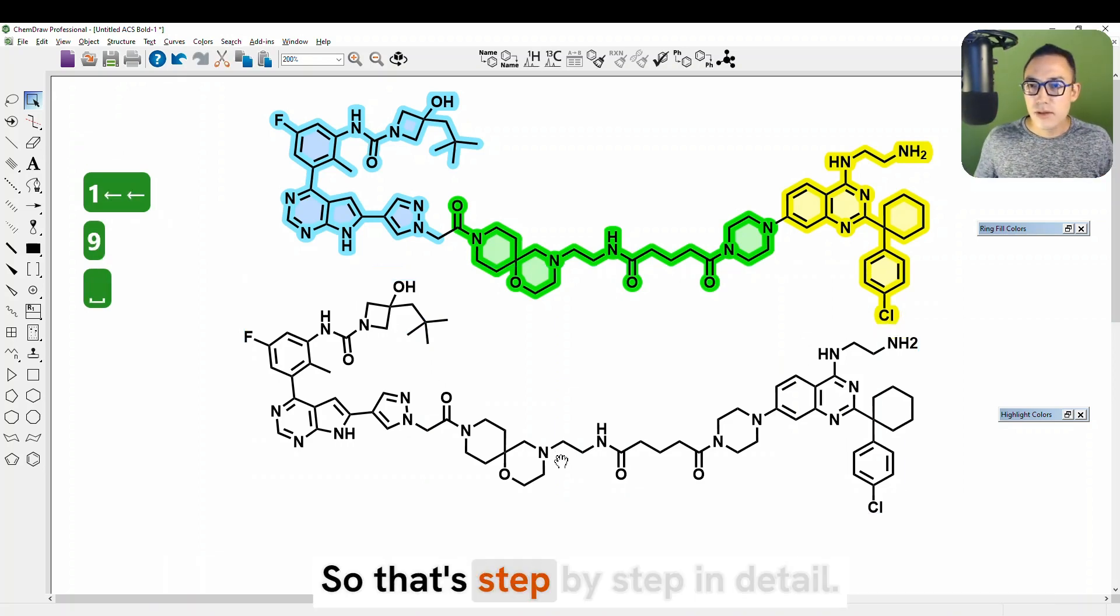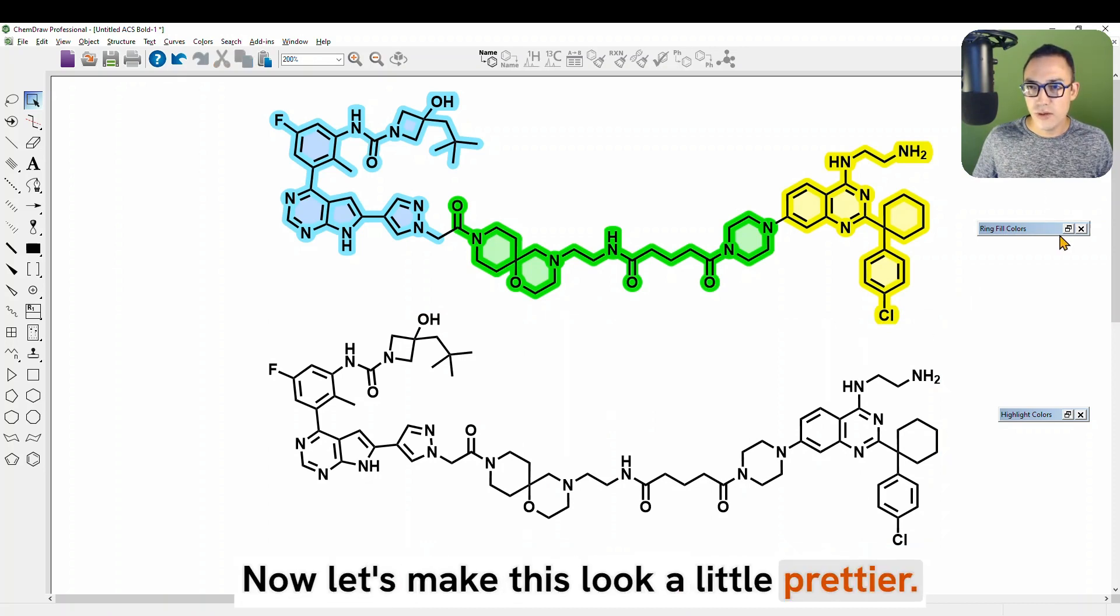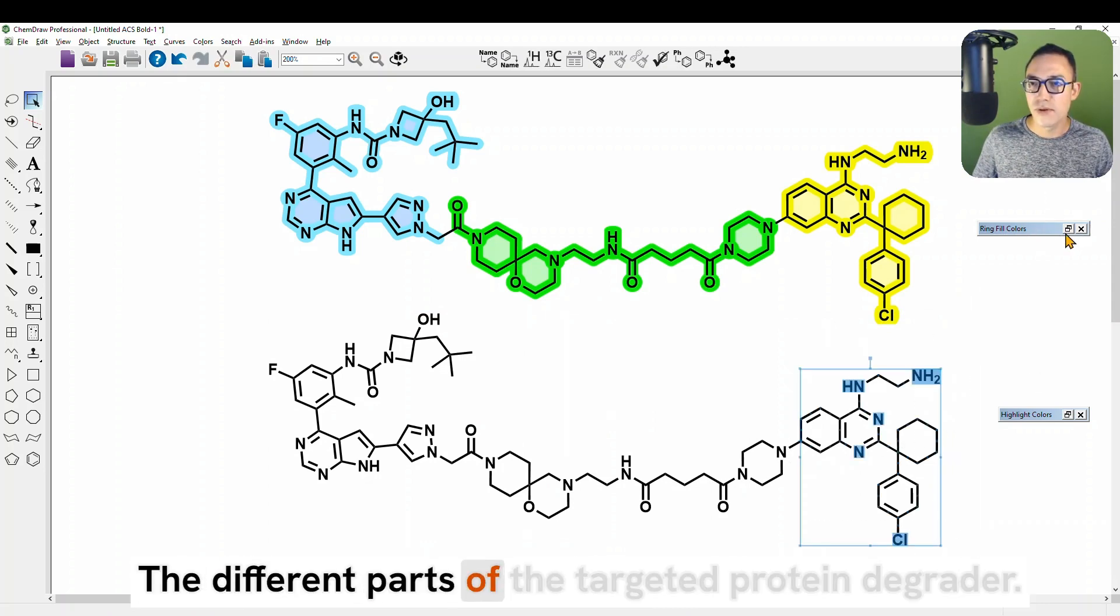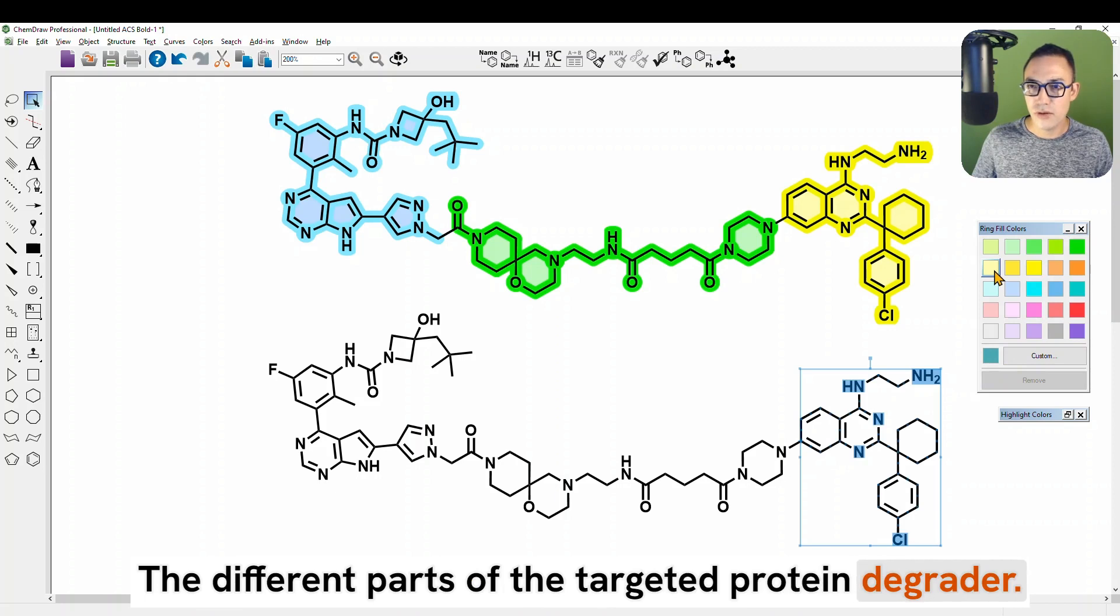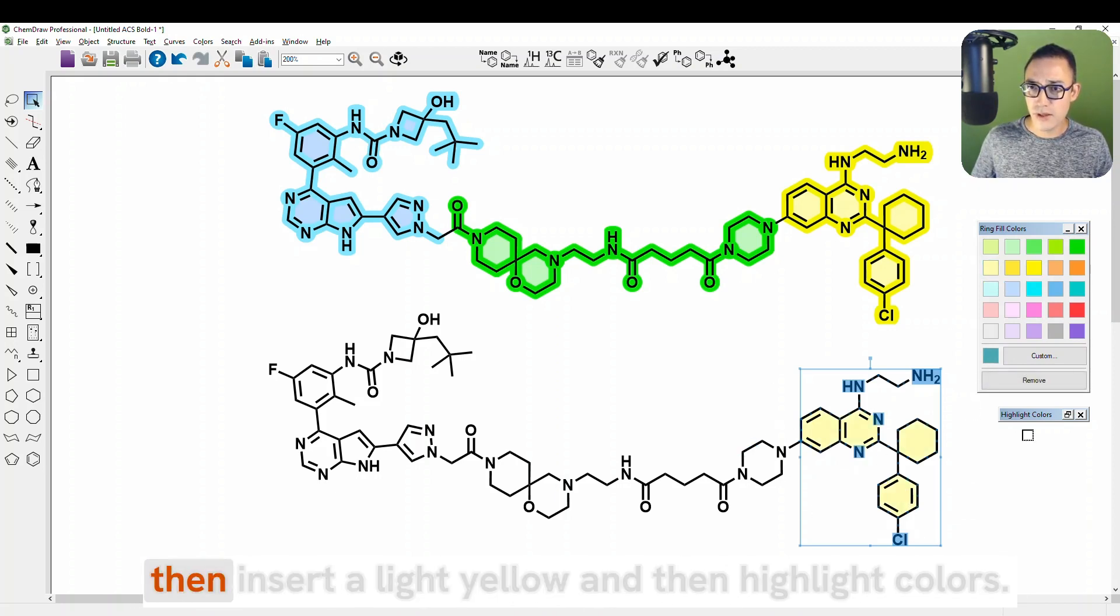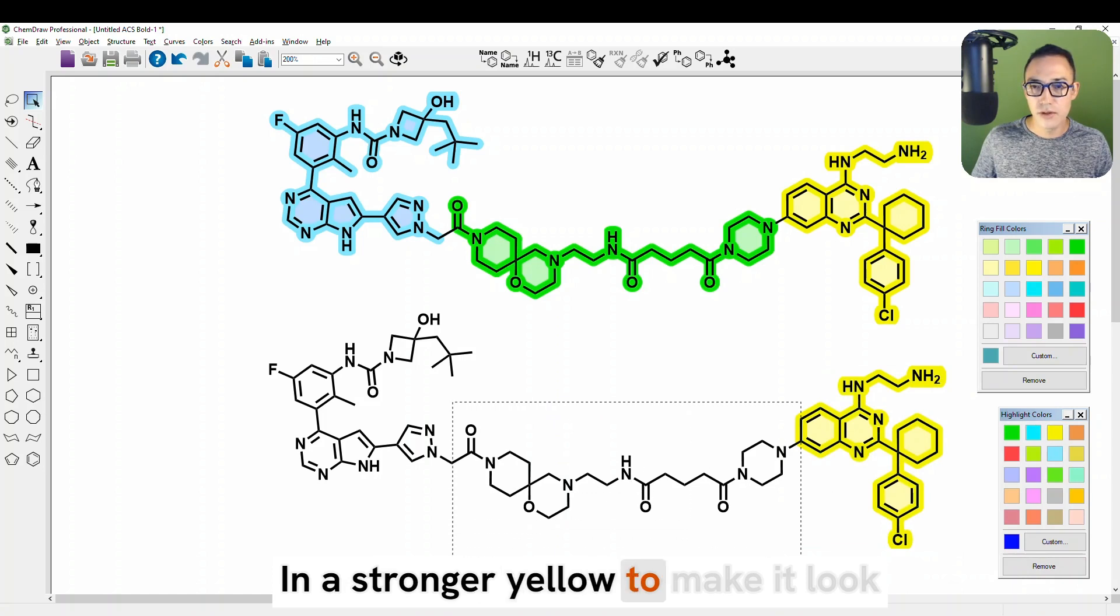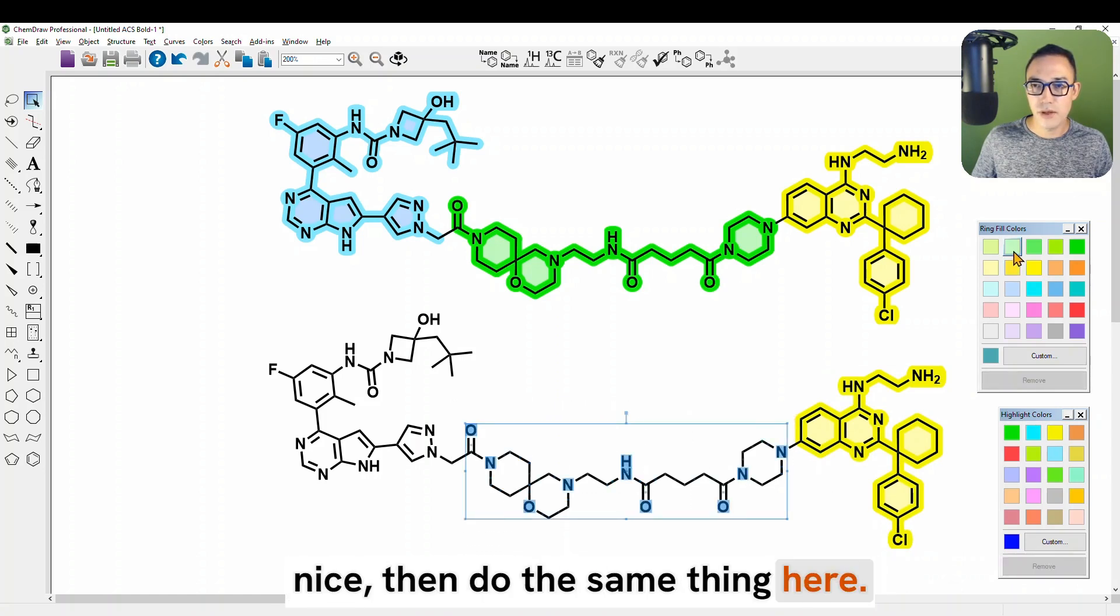So that's step-by-step in detail and then CTRL-F. Now let's make this look a little prettier, the different parts of the targeted protein degrader. So we're going to select this part of the molecule and then insert a light yellow and then highlight colors in a stronger yellow to make it look nice.